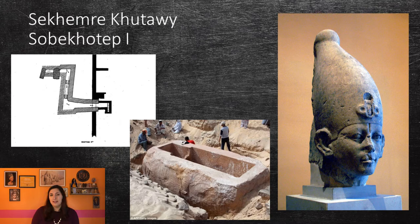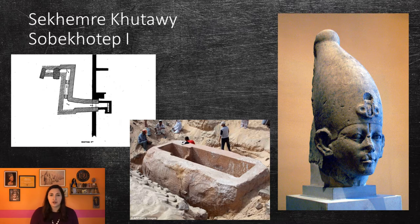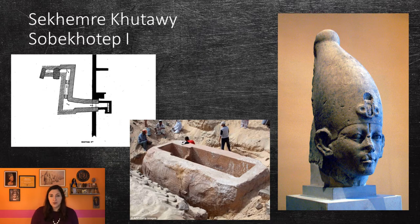It was originally speculated that Sobekhotep I was buried in a tomb in Abydos, labeled S-10. This is in a royal necropolis that dates to the Middle Kingdom and Second Intermediate Period, and is close to the funerary complex of Senusret III. The tomb's owner was completely unknown until 2013, when a relief bearing the name Sobekhotep was found. Because of this, it was originally attributed to Sobekhotep I, but as of 2015, it has now been attributed to Sobekhotep IV. Unfortunately, the tomb of Sobekhotep I is still not known.